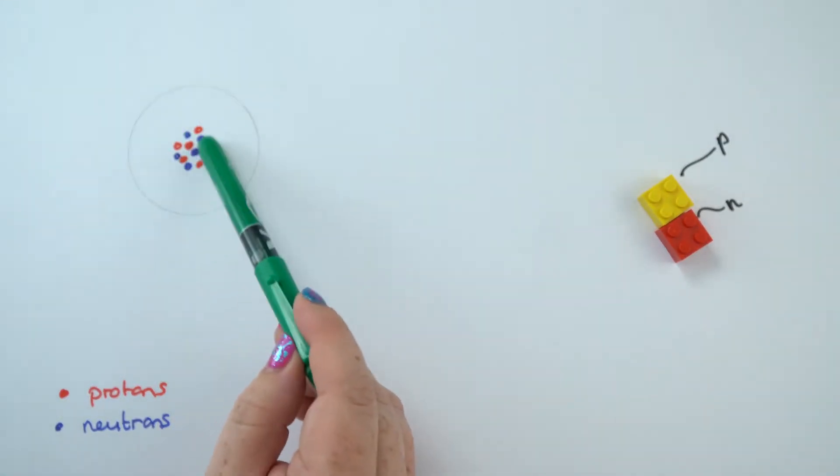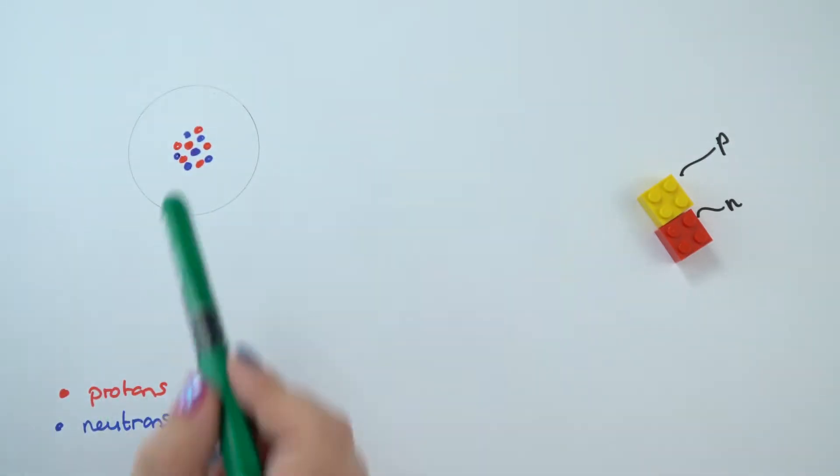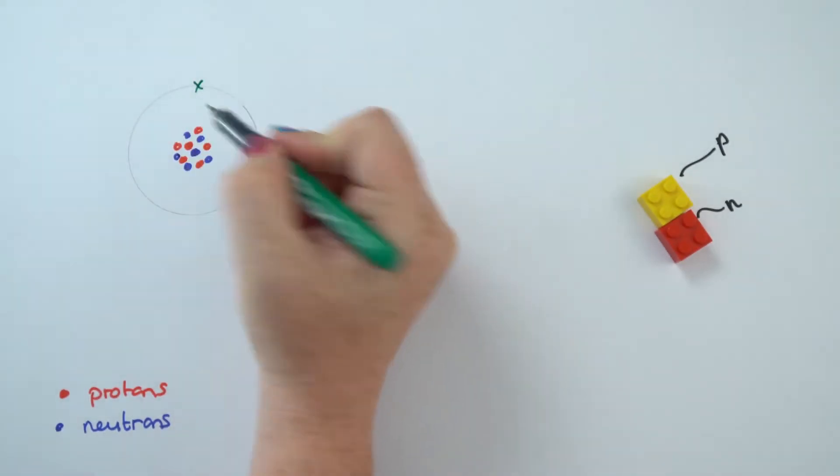And this bit here, where all the mass is, this is the nucleus. Now those of you paying attention might have noticed that I've just drawn a circle around the nucleus. In this circle around the nucleus live some electrons.